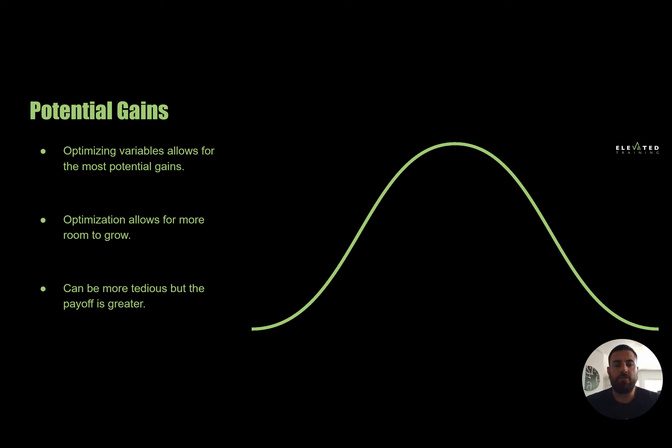So optimizing our variables allows for the most potential in gains, thus this nice big green bell curve. It also allows for more room to grow. So if we optimize everything, we have a lot of space where we can start targeting or hitting. We're hitting stimulus and recovery in this certain space to create this bell curve.